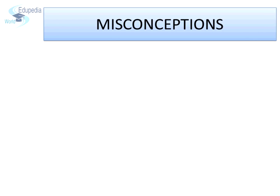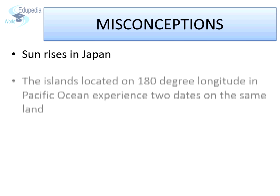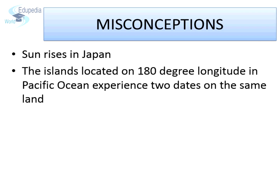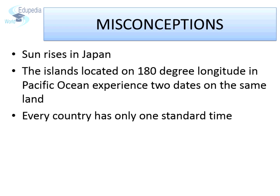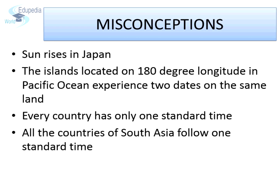Before we begin our exploration about the lines of longitude, let us look at some common misconceptions regarding lines of longitude and time. First, many people believe that the sun rises in Japan every day. Some people believe that islands located on 180 degree longitude in the Pacific Ocean experience two dates on the same land. Every country has only one standard time. All the countries of South Asia follow one standard time. All these are misconceptions. Let us find out what the true facts are.